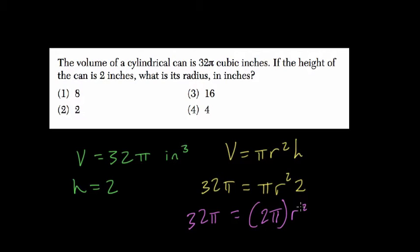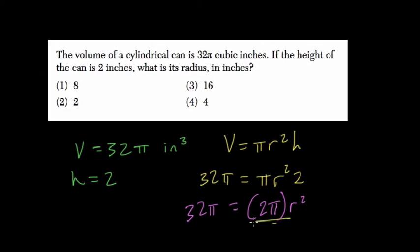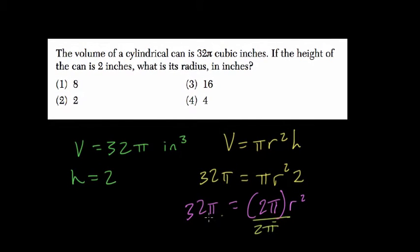Alright, so when you're trying to solve for r², we can just divide both sides by 2π. And look how nice this becomes. Here these cancel out, π divided by π is 1, 32 over 2 is 16, and this means r² is 16. And I'll write that up here.